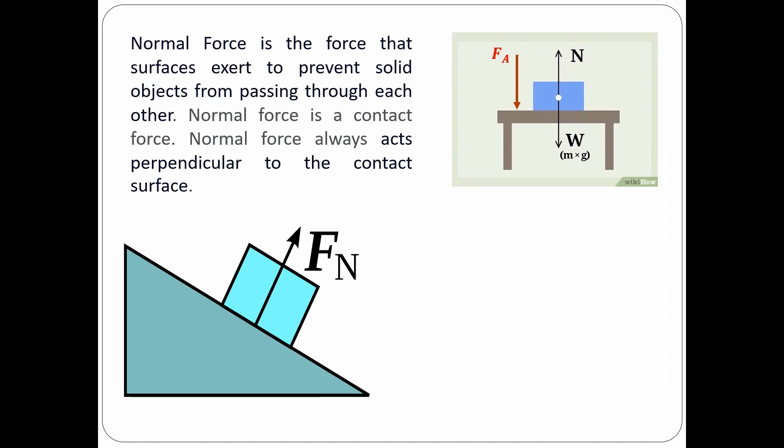Now if you want to decrease the normal force, what you need to do is lift up the box. And one way to lift the box is by attaching a rope to the box and applying an upward tension force. So by doing this, you reduce the stress that's on the surface of the table.